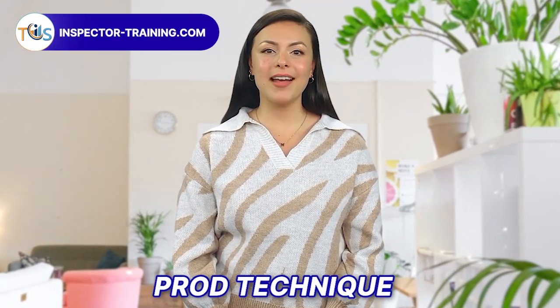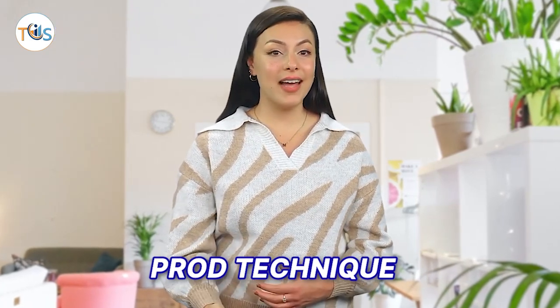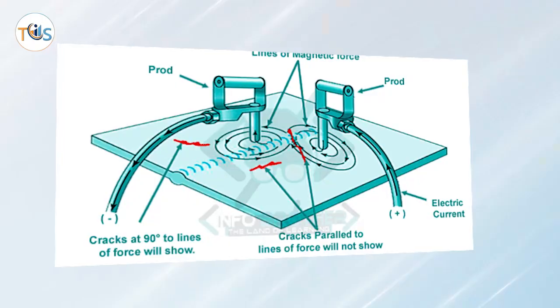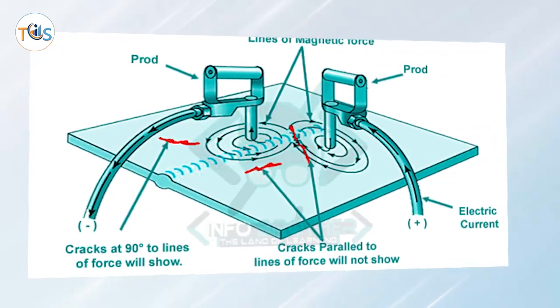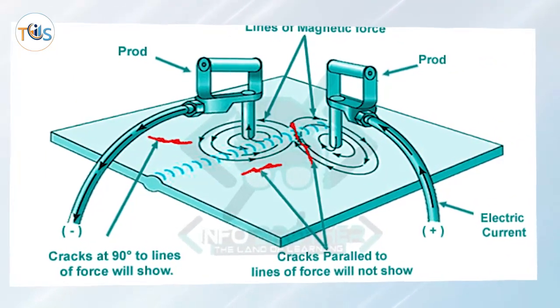Magnetizing Techniques: Prod Technique. Prods are handheld electrodes pressed against the surface of the component being inspected to make contact for passing electrical current through the metal.